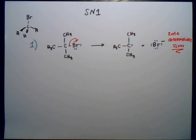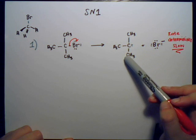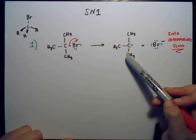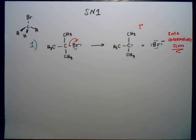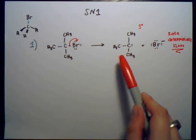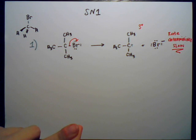Now we've got a carbocation and the bromide. It's important to note that this particular carbocation has a carbon attached to three other carbons — that makes it a tertiary carbocation. Tertiary carbocations are the most stable and most favorable. A molecule is going to want to form tertiary carbocations, or rearrange itself in order to form one if possible.